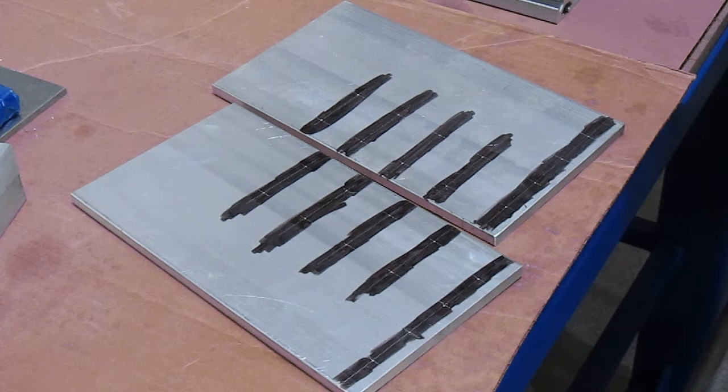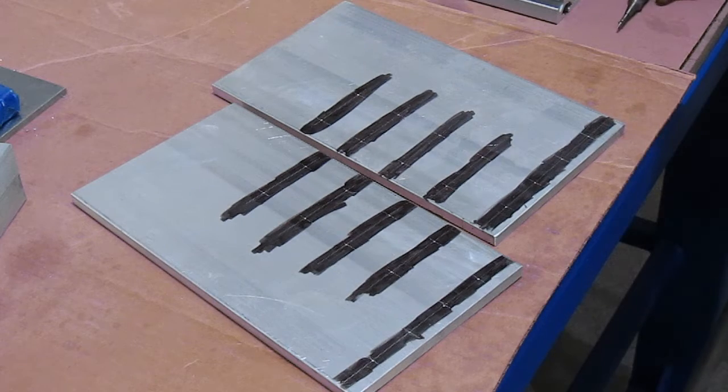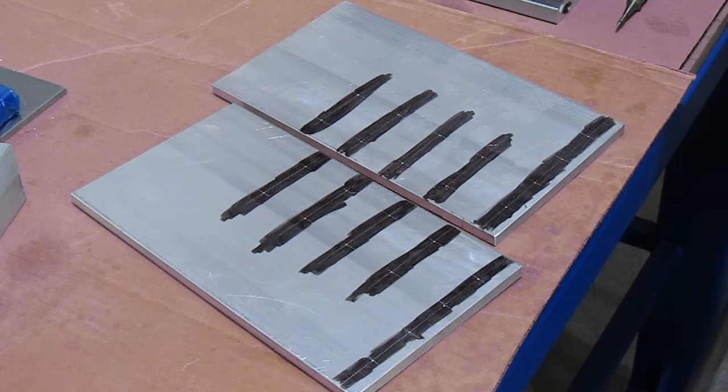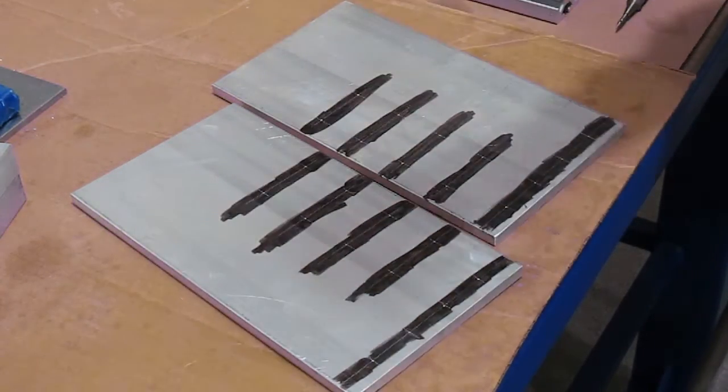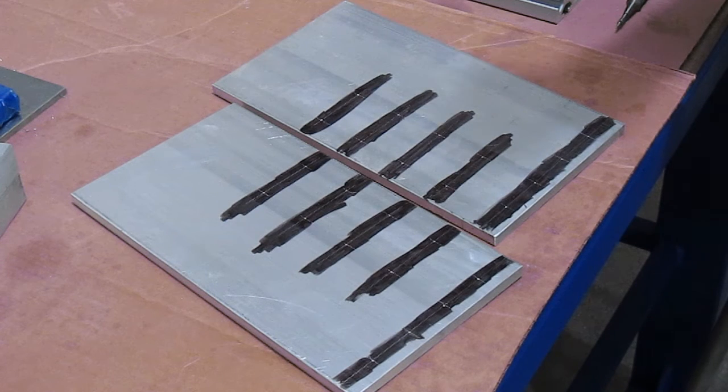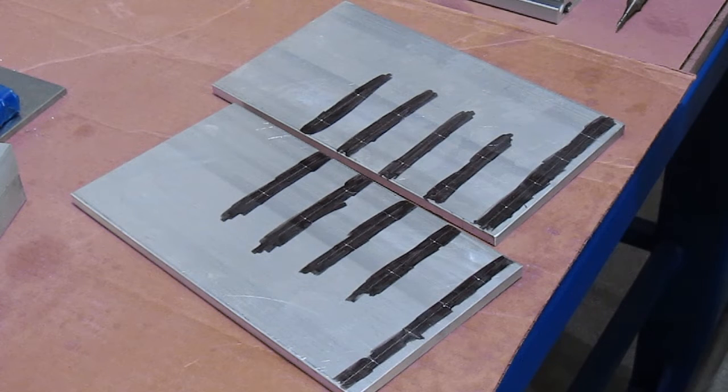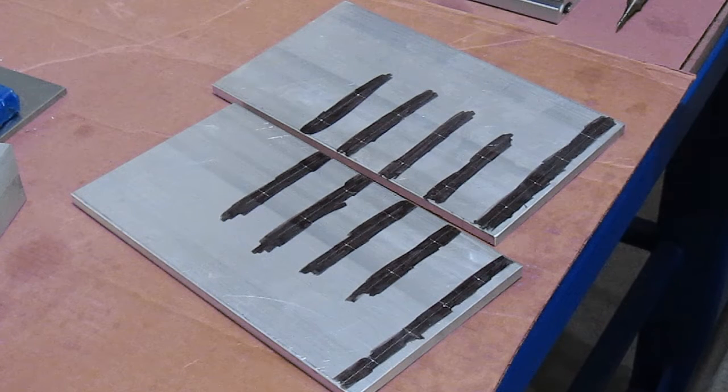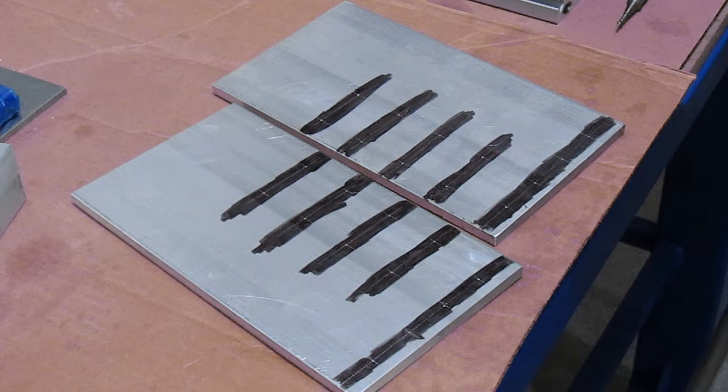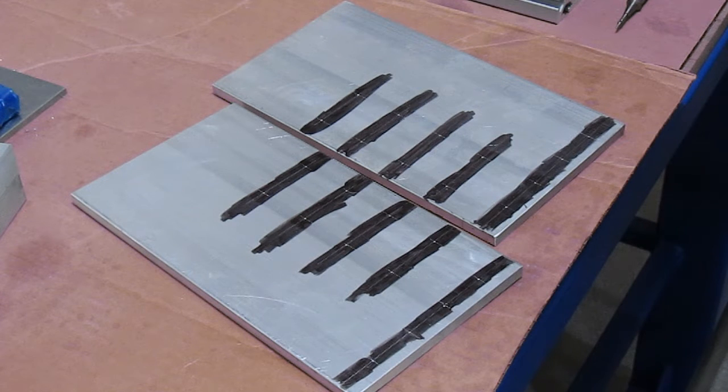Now, once we have our initial location for our holes, we can go in with our heavier center punch, strike it, and enlarge our location for the hole. I will go ahead and do that now.